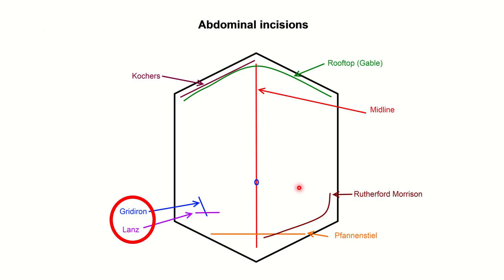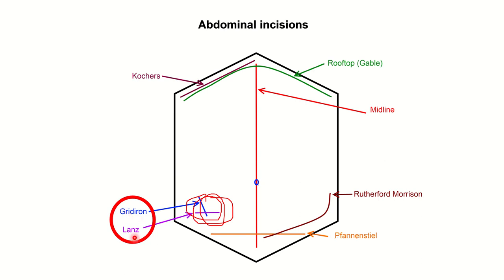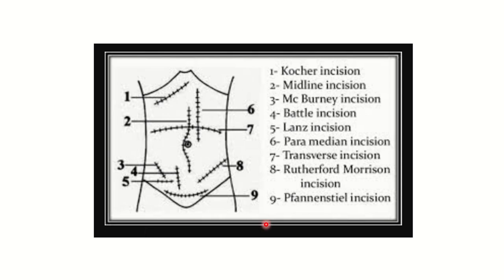In this picture we can see different types of incisions. We know the appendix is located in the right iliac fossa region. Other incisions shown here include the Kocher's incision, the right subcostal, the rooftop incision extending from right to left, midline incisions — upper, lower, and whole midline — the Rutherford Morrison incision, the Pfannenstiel incision used for lower segment cesarean section. In the appendix area there are two important incisions: the gridiron and the Lanz.